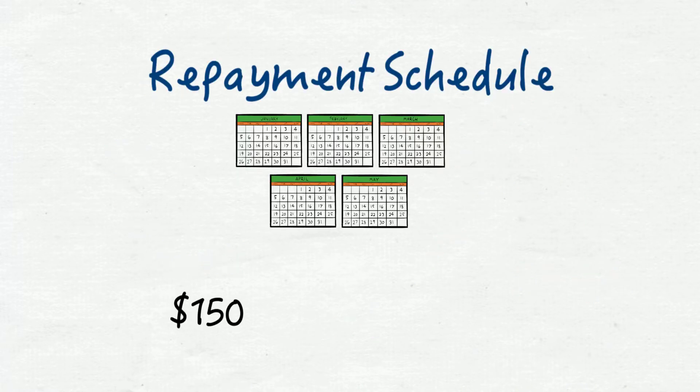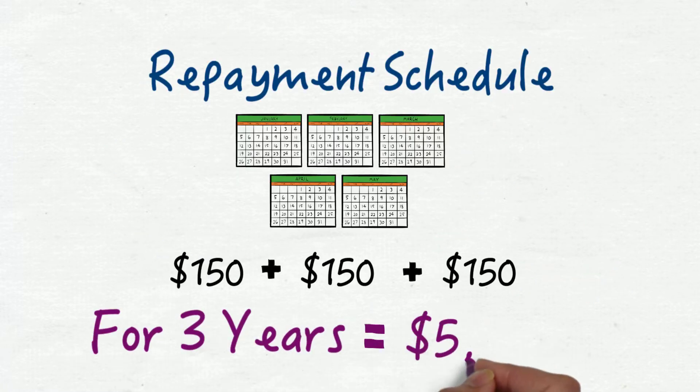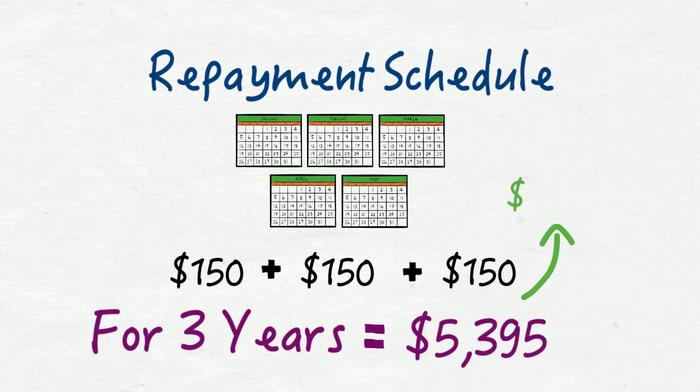And if you pay $150 every month for 3 years, you'll end up paying $5,395 to the loan. $5,000 of that will be the principal that you borrowed. $395 is the total interest paid. Not too tricky, right?